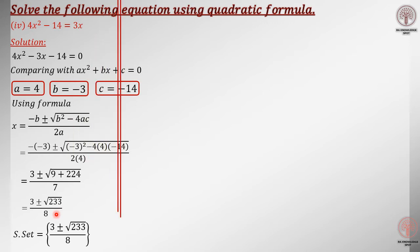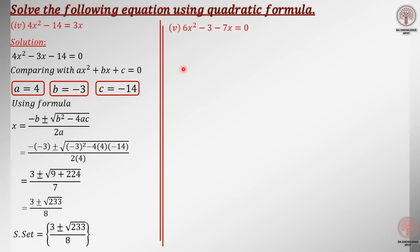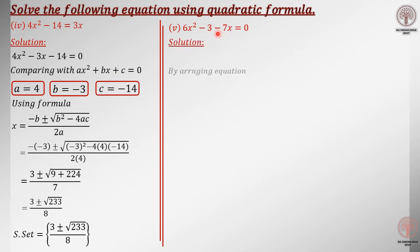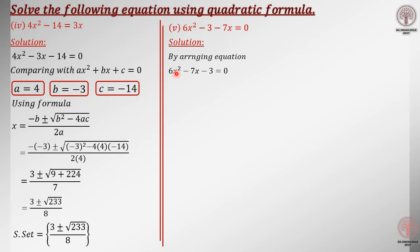Moving towards the next part — this is the fifth part. That is: 6x squared minus 3 minus 7x is equal to 0. Is this the arranged form? No, this is not the arranged form, because the first term should have power 2, the second should have power 1, and the last is the constant. So we have to arrange this equation. The arranged form is: 6x squared minus 7x minus 3.